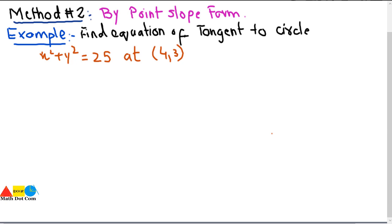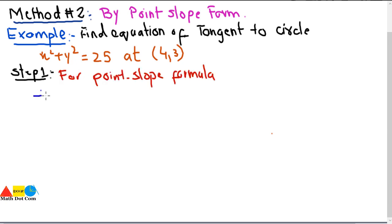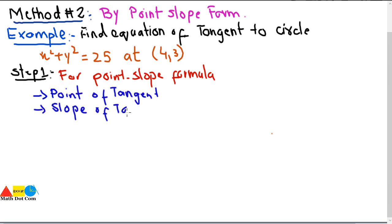This is also an easy method that you can use to find the equation of tangent to the circle. In this method, step number one is you have to use the point-slope formula. For the point-slope formula, we need a point of tangency and the slope of the tangent. We need these two things to find the equation of tangent to the given circle.